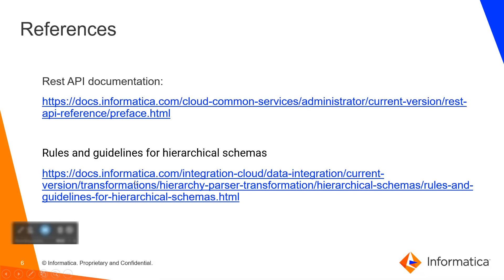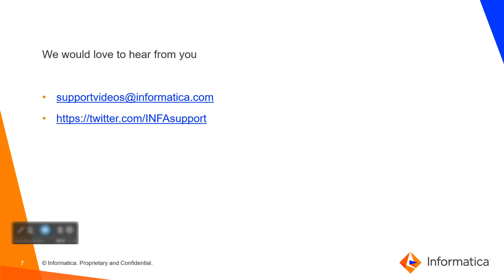Here are some references for the API documentation and rules and guidelines for hierarchical schema. The REST API interface follows the same restrictions as the UI — for example, a hierarchical schema can contain up to 10,000 fields, 500 groups, and 10,000 elements. Please go through the documentation for further clarification. Provide your feedback at support-videos@informatica.com or leave a tweet at @informaticasupport on Twitter.